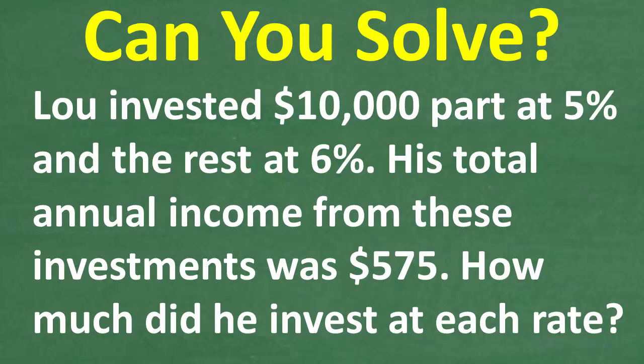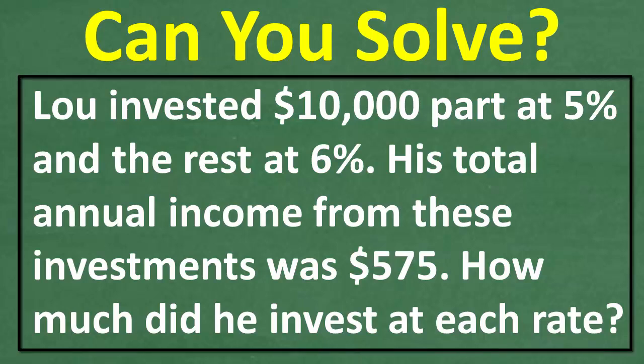It is as follows. Lou invested $10,000, part at 5% and the rest at 6%. And what we're talking about here is simple interest, no compounding. His total annual income from these investments was $575.